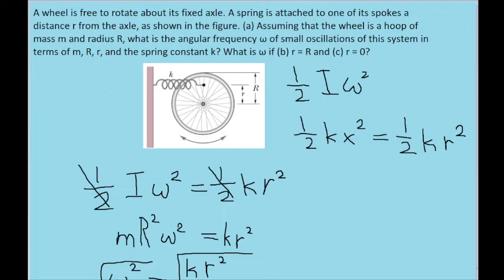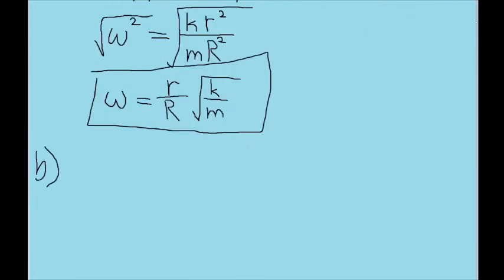Now part b asks for a new formula, but when small r and big R are equal. So in other words, where the spring is attached to the rim of the wheel. And we've already done all the hard work. This next step is pretty easy.